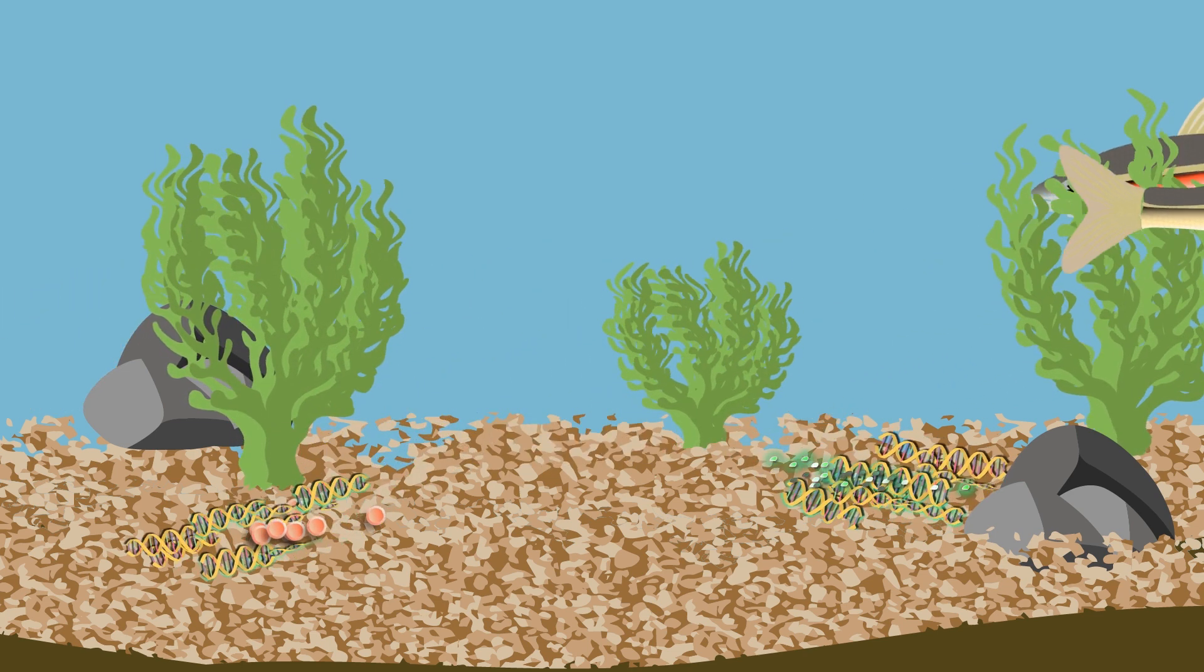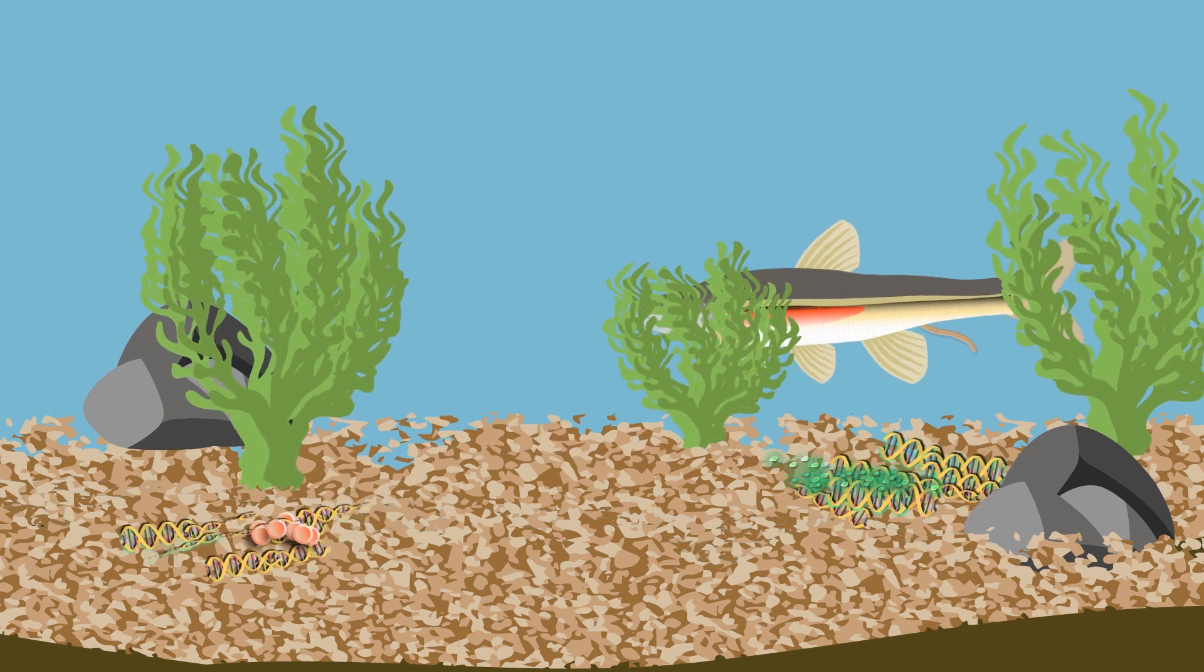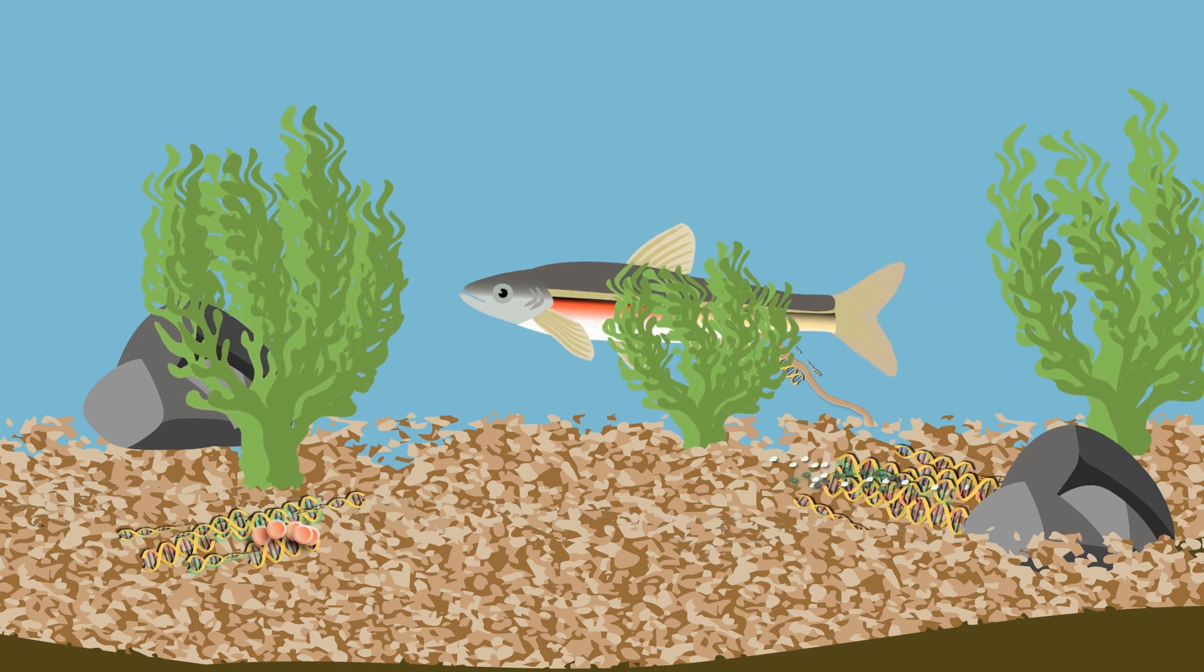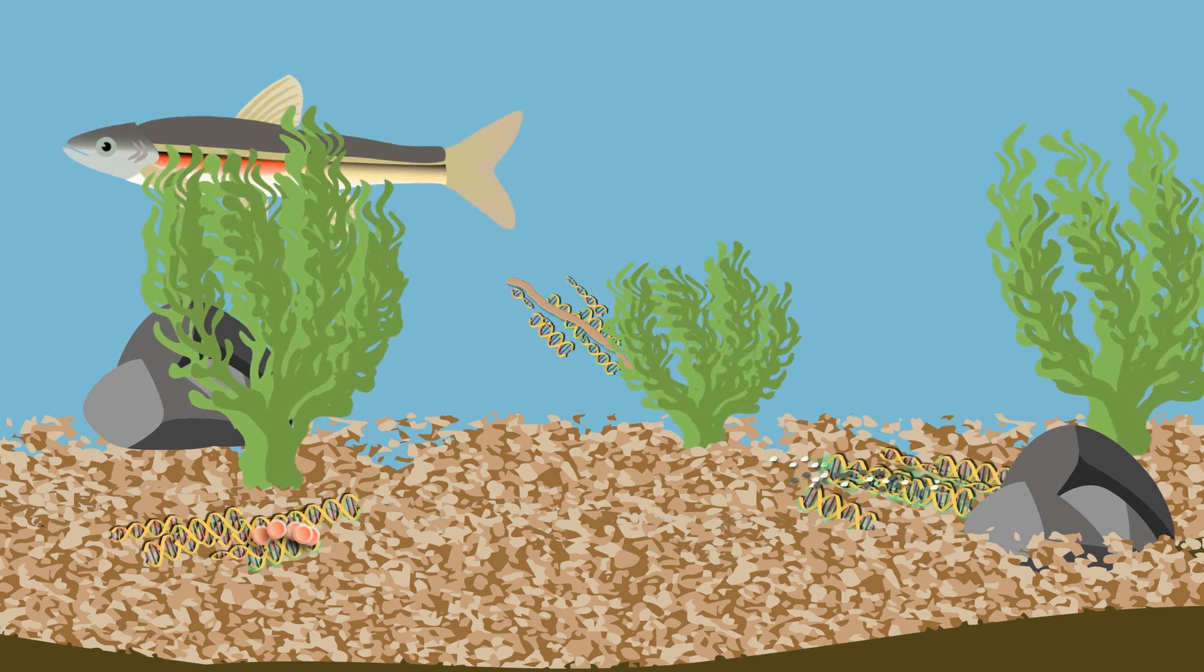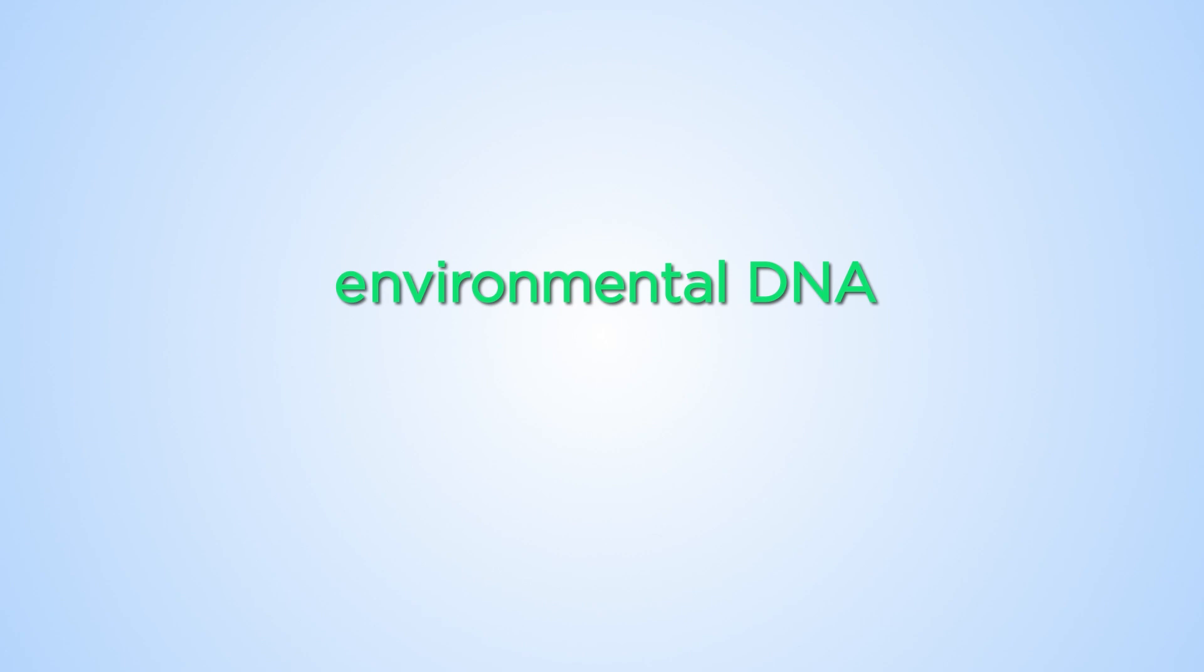Whenever an organism moves through its environment, it leaves behind fragments of DNA from skin, scales, feathers, fur, faeces and urine. This kind of DNA is called environmental DNA, or eDNA.